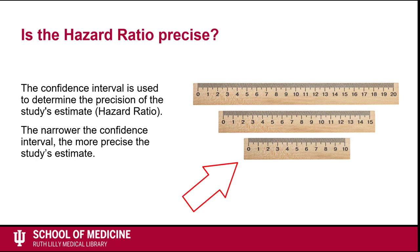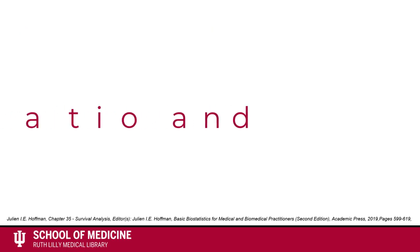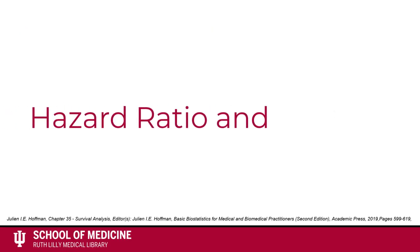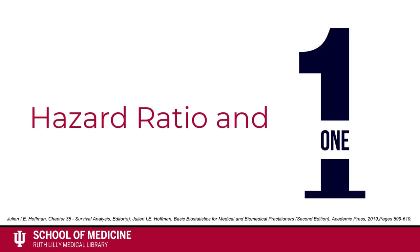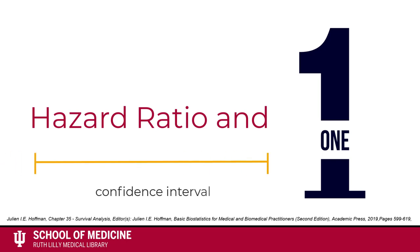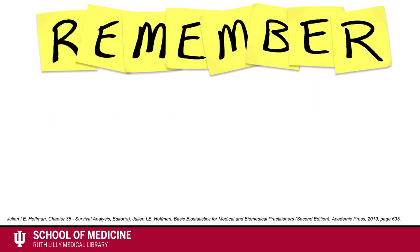You want to look at the width of the hazard ratio's confidence interval. The narrower the confidence interval, the more precise the hazard ratio. Also, it is important to notice the hazard ratio's relationship to 1. If the confidence interval of the hazard ratio crosses 1, this indicates that there is no difference between the two curves.